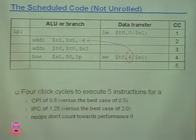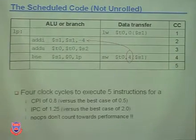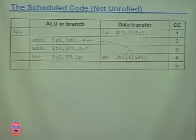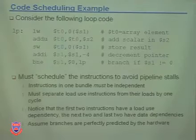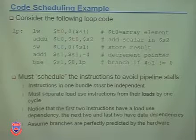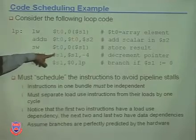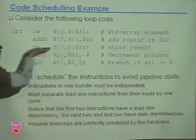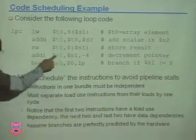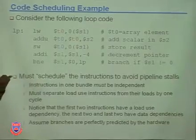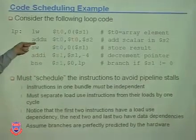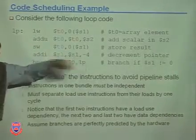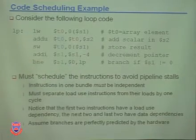Now let's start to unroll the loop. In the scheduled code, we change S1 first, then use it. And obviously, you have to put a 4 here to compensate for the fact that you changed the order. In the original code, we used S1 first, then modified it.